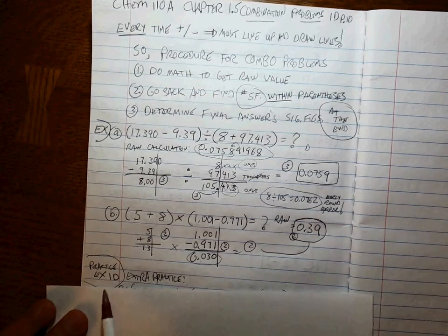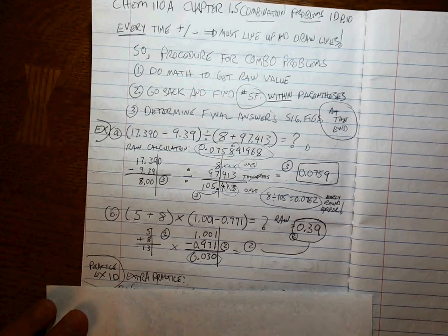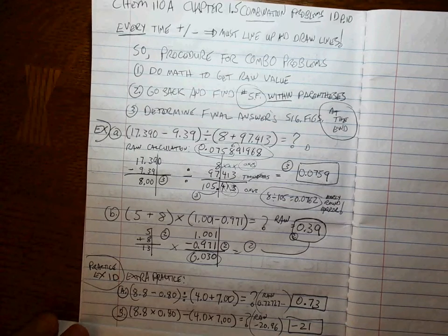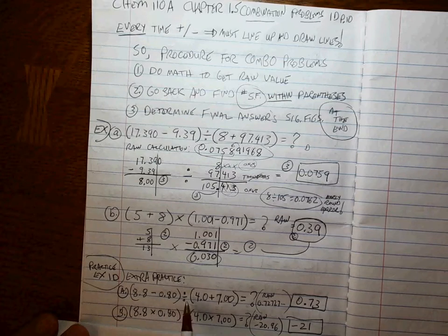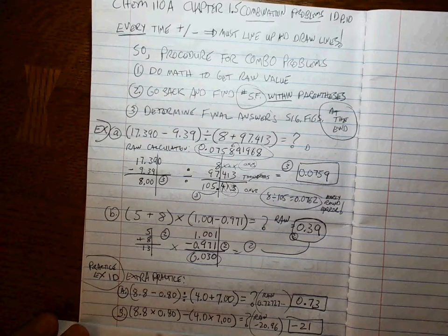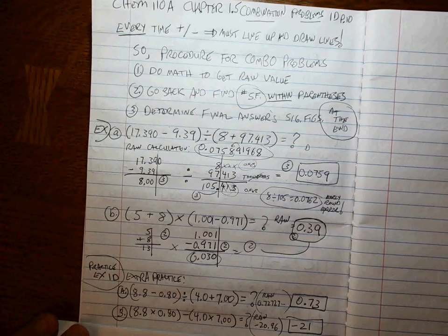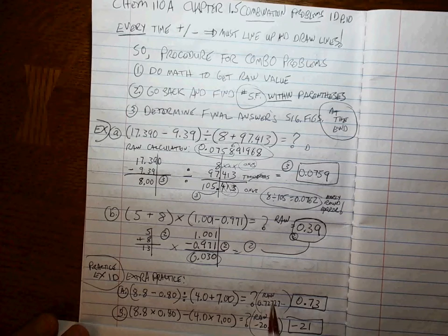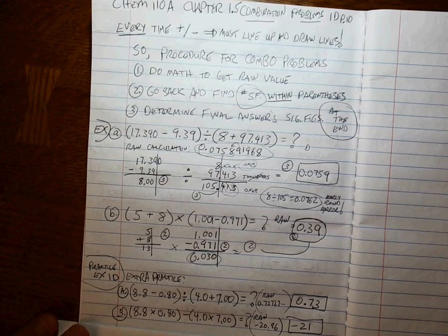The practice problems for you to try to get better at it is exercise 1D. And here's a few extra problems for you. 8.8 minus 0.80. See if you get that value. 8.8 times 0.80. Basically, I switch signs here. See if you get that one. If you're getting this, that's great. But, remember, you have to determine the right number of sig figs. Just getting these raw calculator values isn't good enough. Alright. Have at it. Good luck.